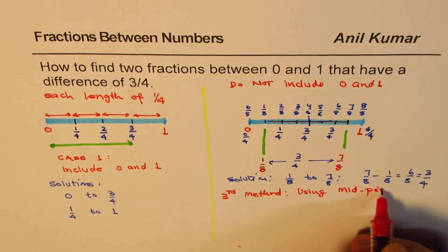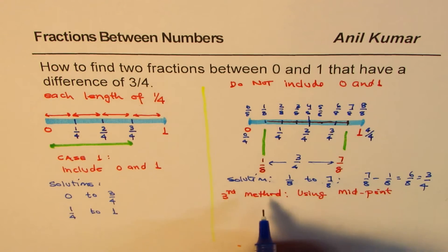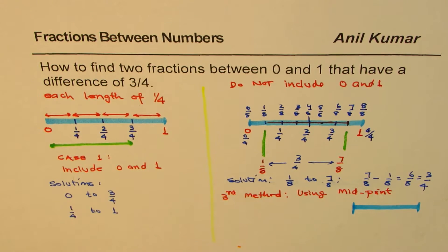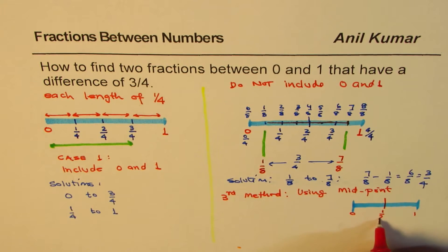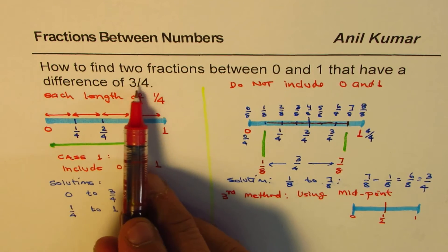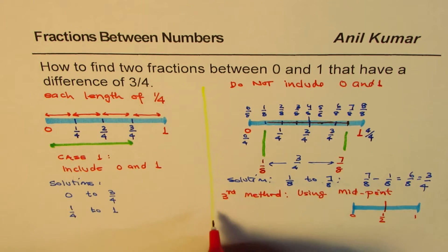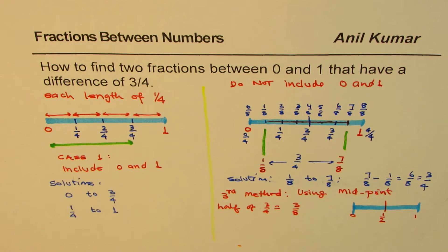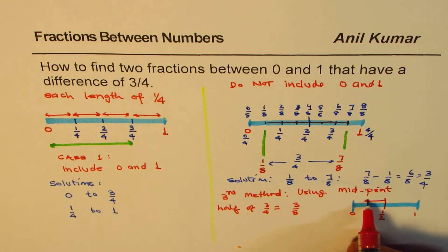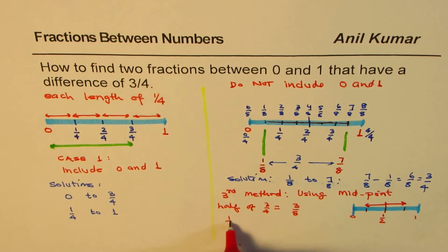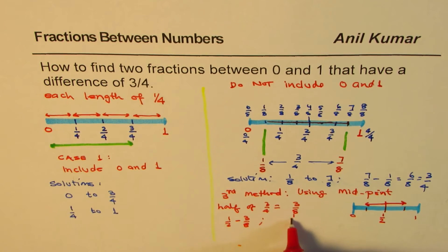The third method is to take the midpoint — this is a very important method you can use in any case. The midpoint of 0 and 1 is half. Let's draw another line from 0 to 1, with the midpoint at half. From half, we want two points on either side so that we have a distance of 3 fourths in total. So what is half of 3 fourths? Half of 3 fourths is equal to 3 by 8. So if I go 3 by 8 to the left and 3 by 8 to the right, I get two numbers whose difference is 3 fourths.